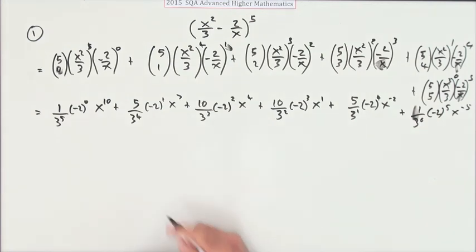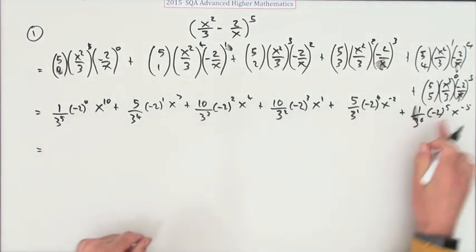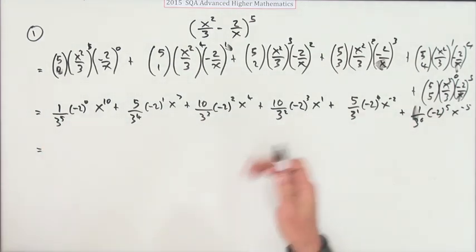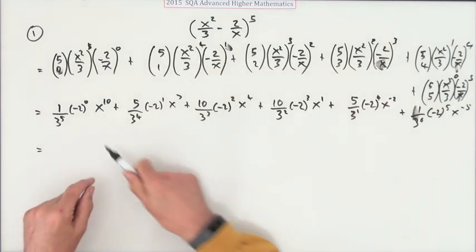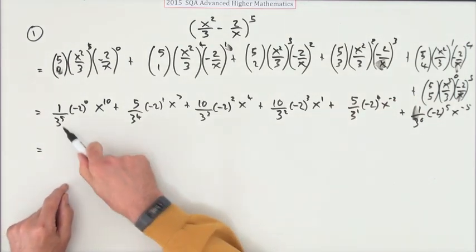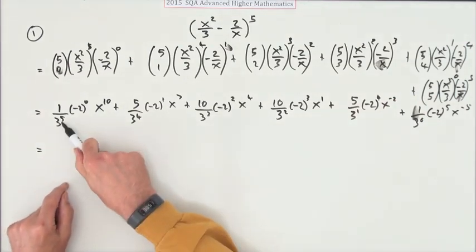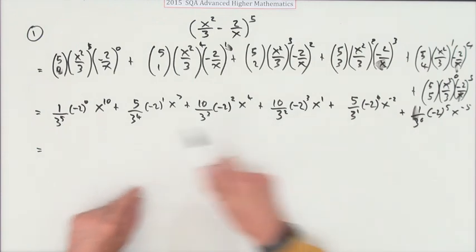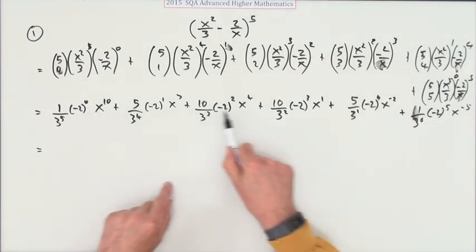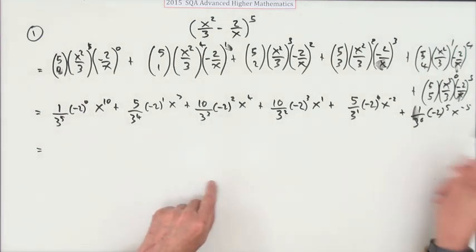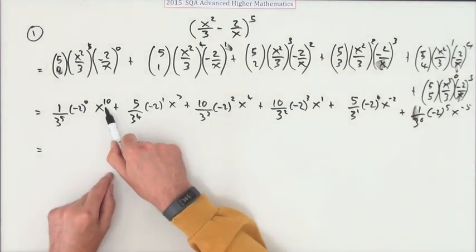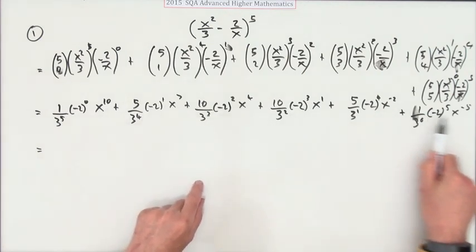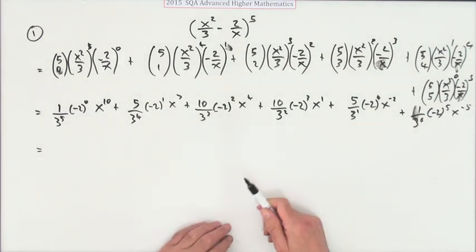So you can quickly check so far — is that worth the second mark? You can quickly check it's still on target because I've got my threes going five, four, three, two, one, zero. I've got the negative two going zero, one, two, three, four, five. I've got the powers of x dropping by three: ten, seven, four, one, negative two, negative five.